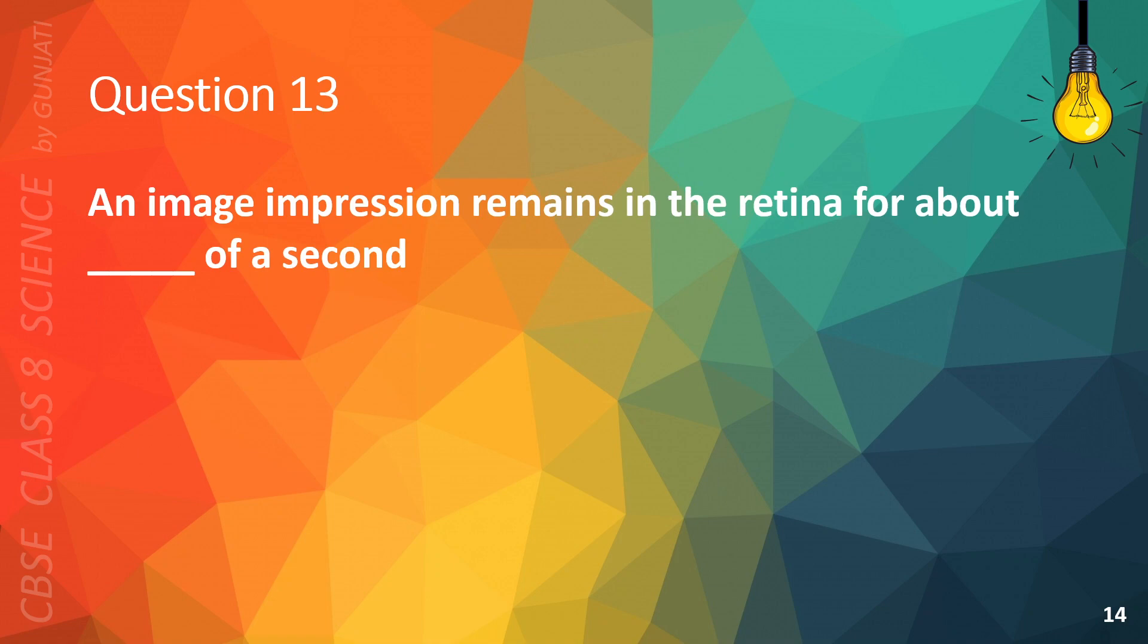Question 13. An image impression remains in the retina for about blank of a second. A. 1/4th, B. 1/8th, C. 1/16th, or D. 1/32th. The correct answer is C, 1/16th.